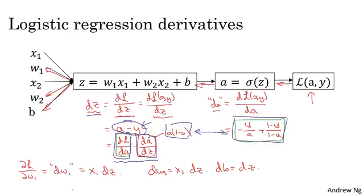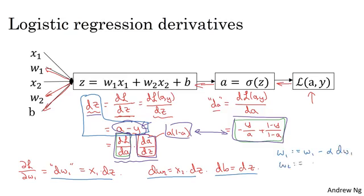what you would do is the following. You would use this formula to compute dz, and then use these formulas to compute dw1, dw2, and db. Then you perform these updates. w1 gets updated as w1 - α×dw1. w2 gets updated similarly, and b gets set as b - α×db.